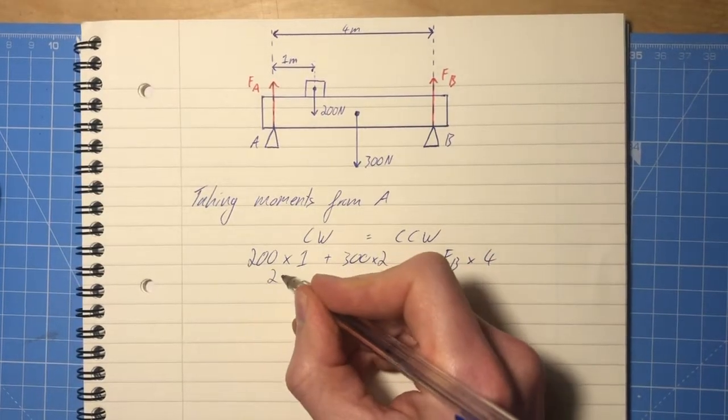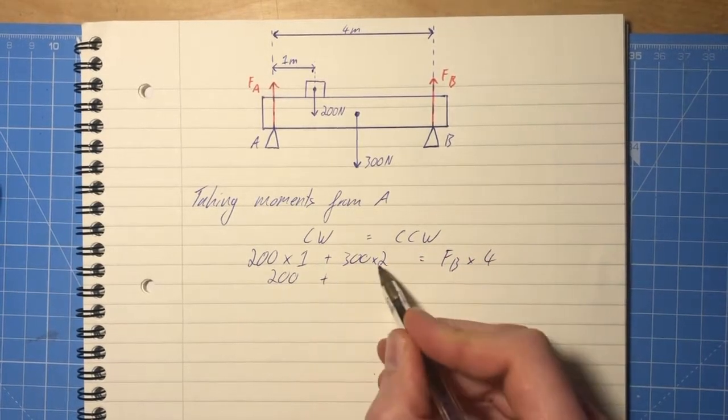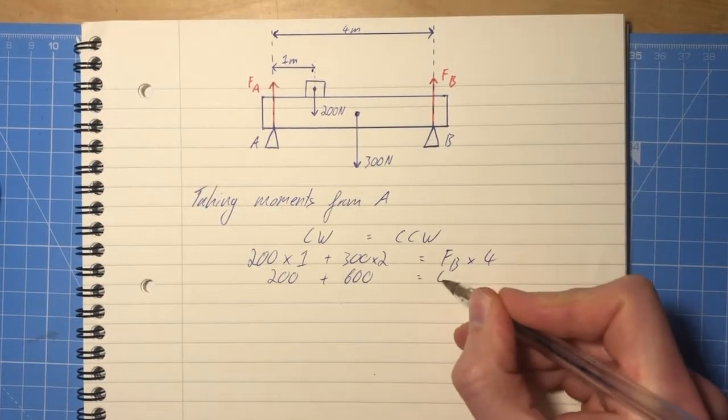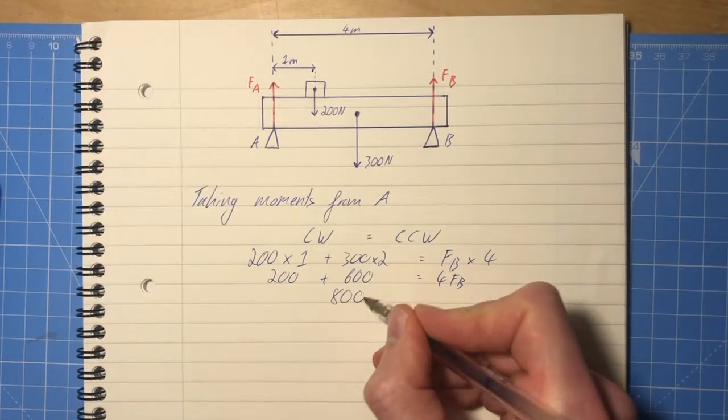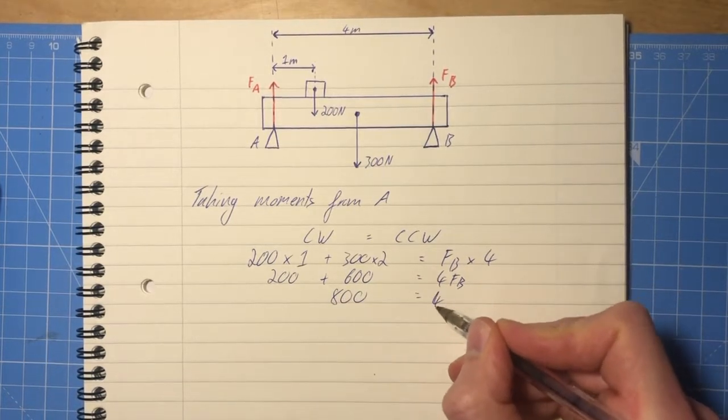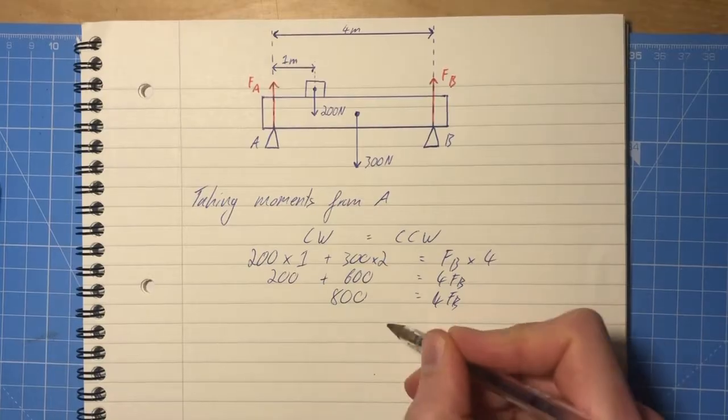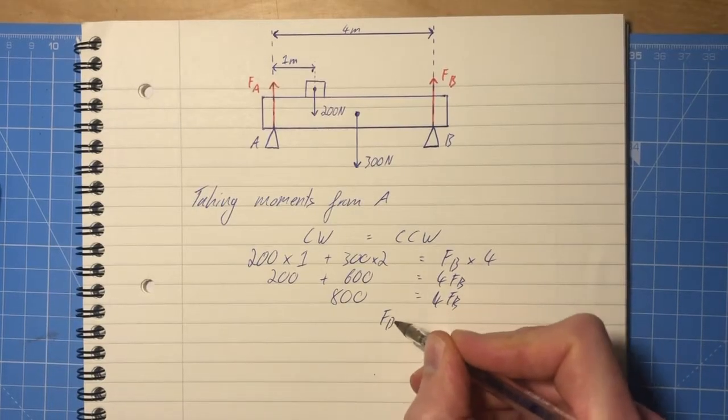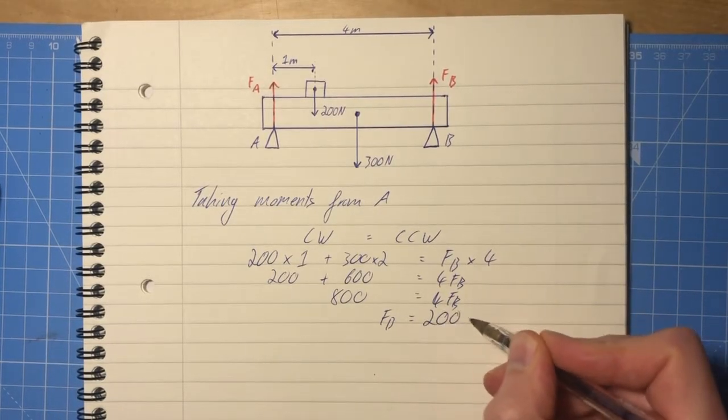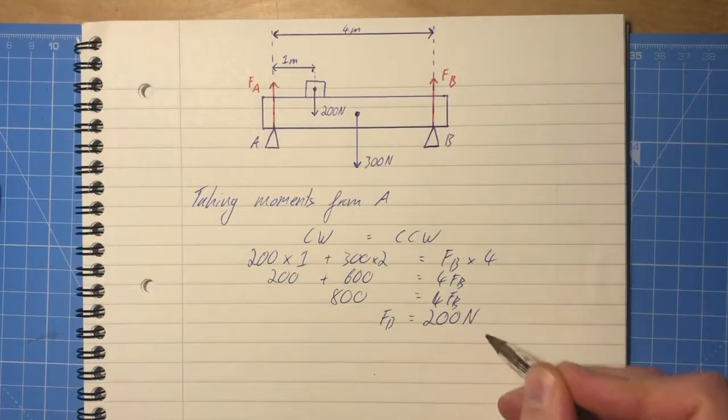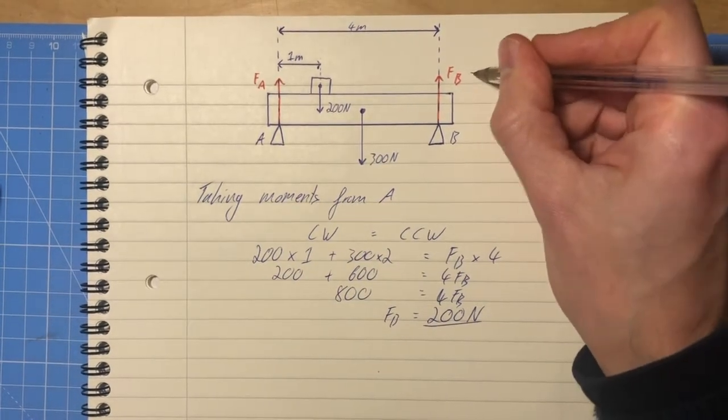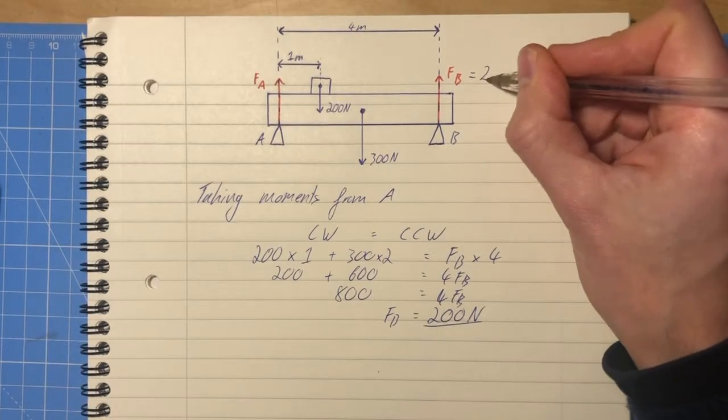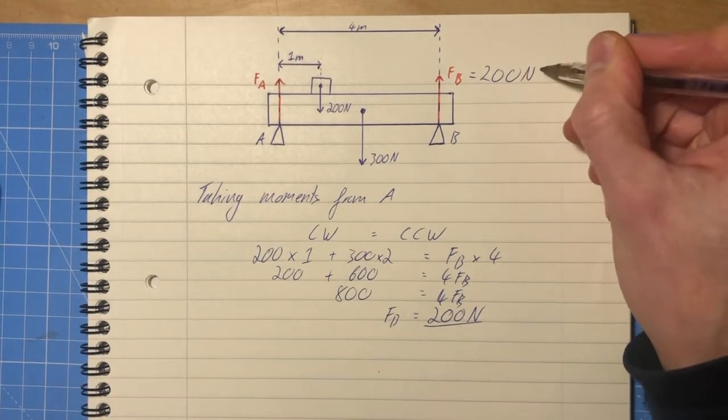So we have 200 plus 600 is 4 FB, so that's 800 equals 4 FB, so FB is 200. And it's a force, so it must be in newtons. So now we know this one up here, 200 newtons.